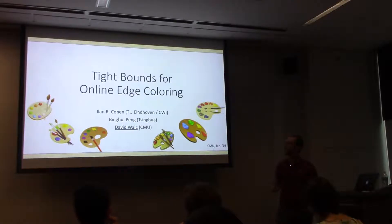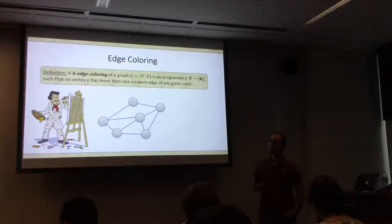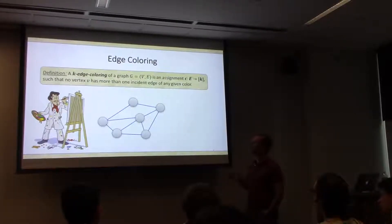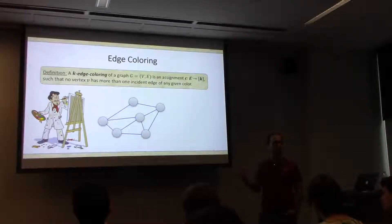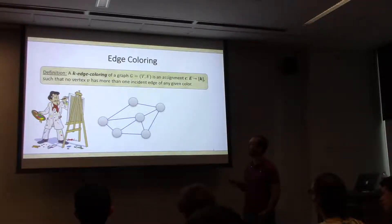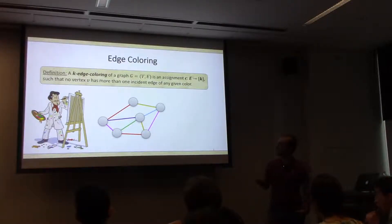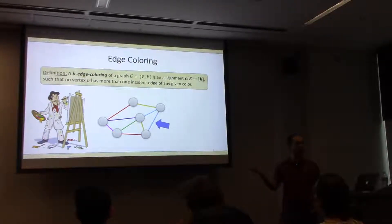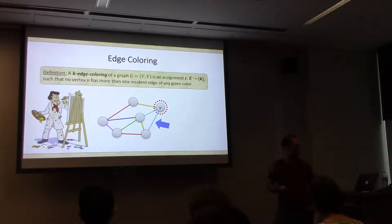Let's make sure we're all on the same page as to what edge coloring is. A k-edge coloring of a graph is an assignment of one of k potential colors to each edge, such that no vertex v is incident on two or more edges of the same color. For example, this is a feasible six-edge coloring. If I change this edge here to be blue, this is no longer a feasible edge coloring, because this vertex has two blue edges.